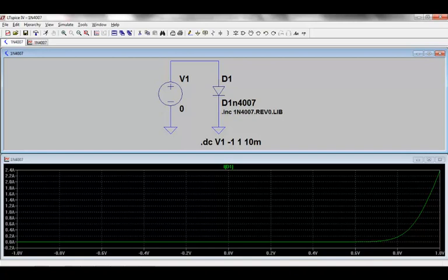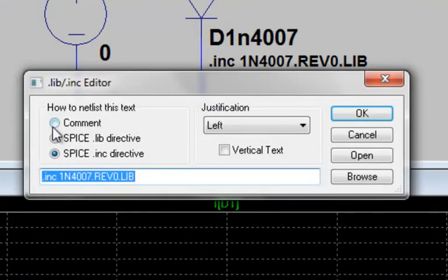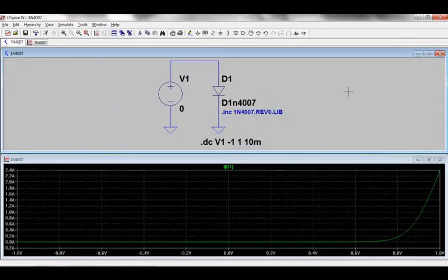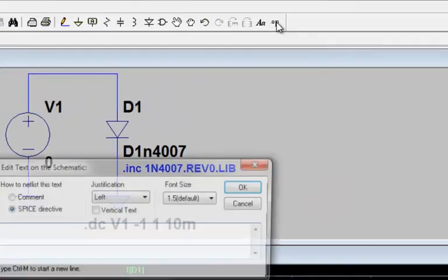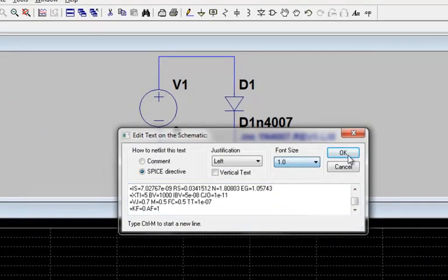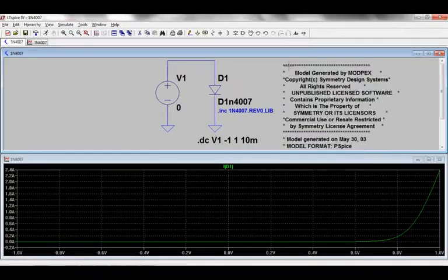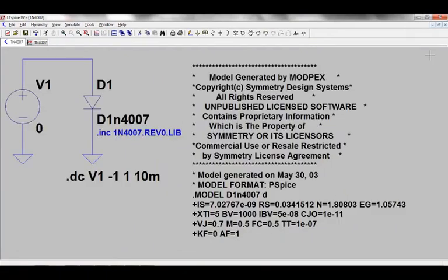Even though the dot include or dot lib statements allow you to reference an external third-party library file, the most portable option is to actually cut and paste the dot model statement into your schematic via SPICE directive. This makes your simulation file very portable and removes dependencies on the library file.